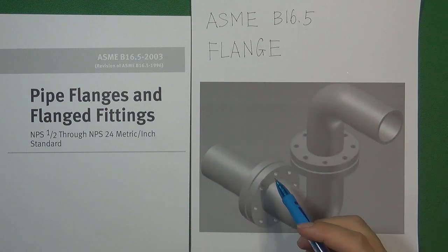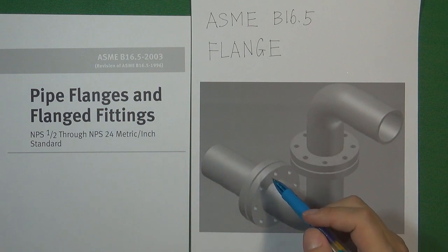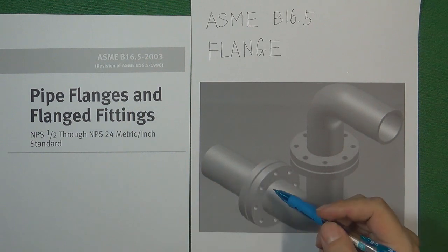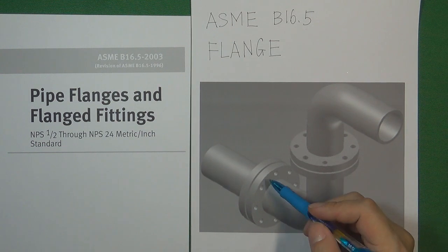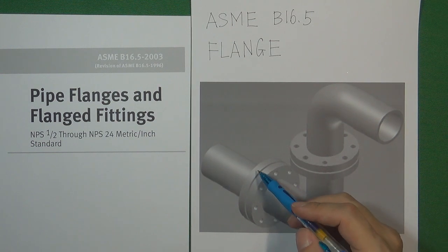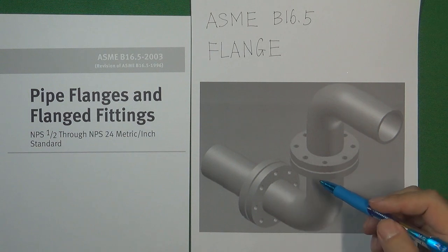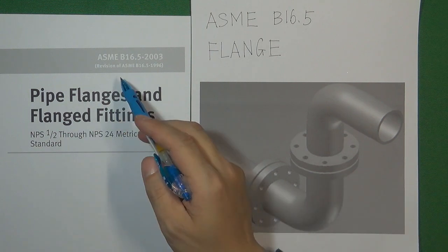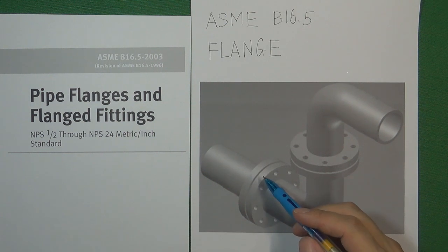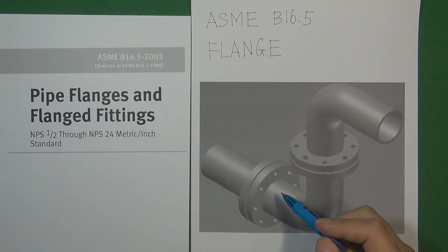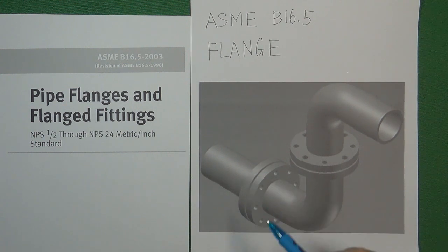The basic flange principle in this standard is that one flange is divided into two sides. One side is going to connect with the pipe, and another side is going to connect with another flange. In this video we are going to talk about what kind of connections one flange has for these two sides.